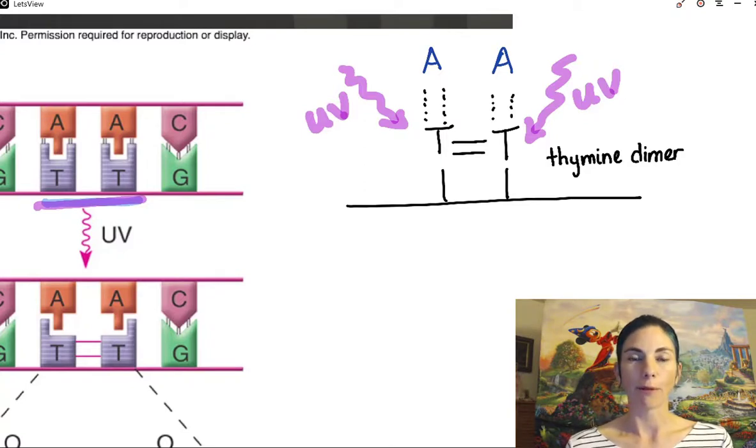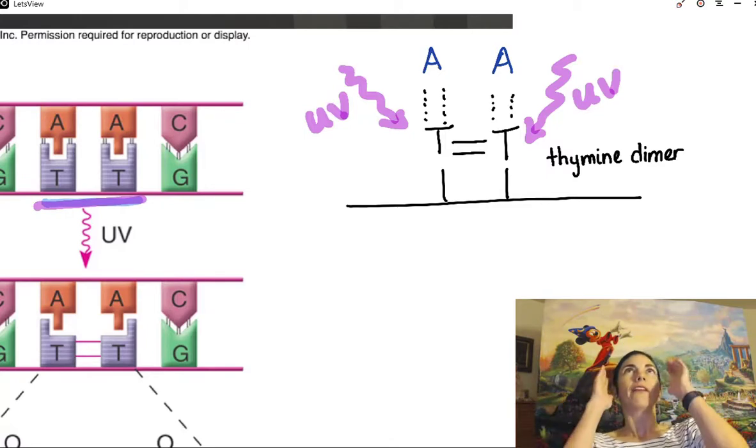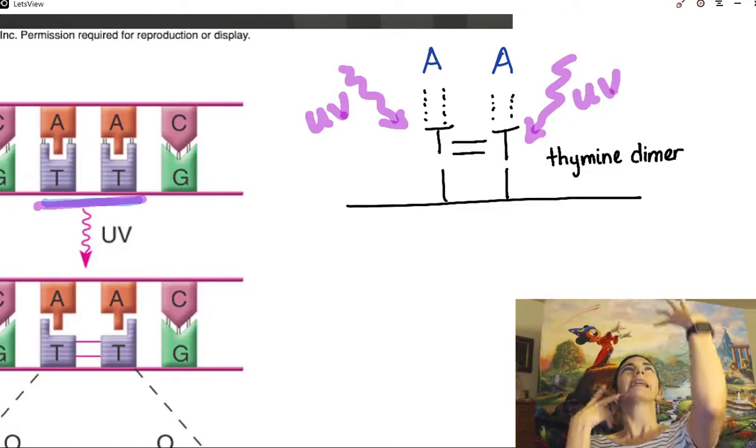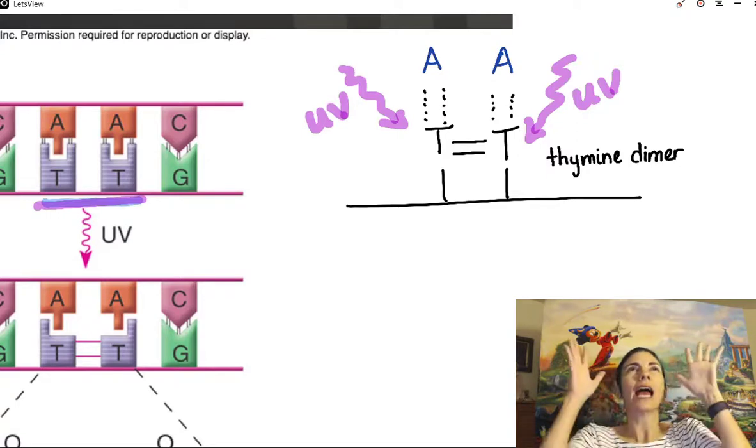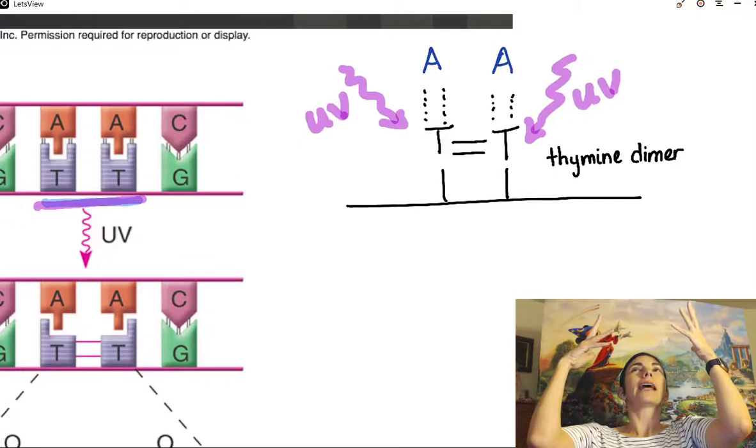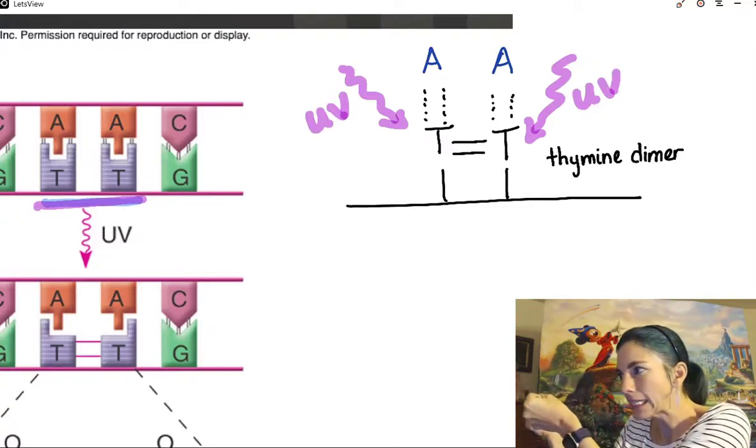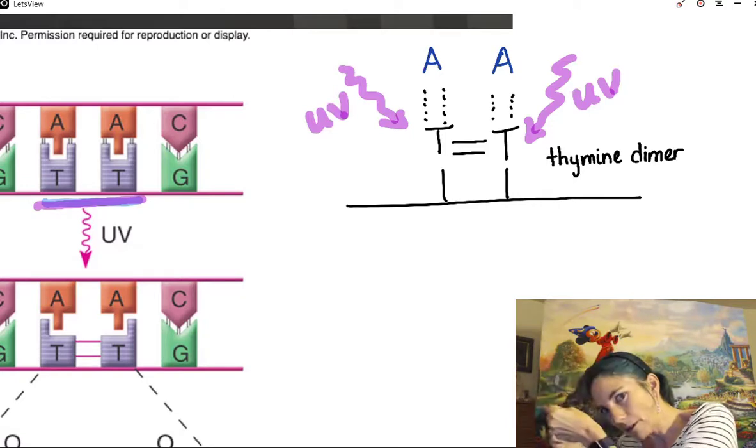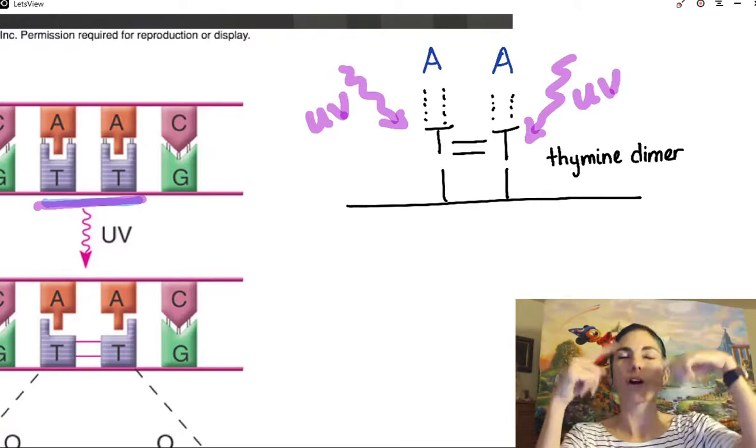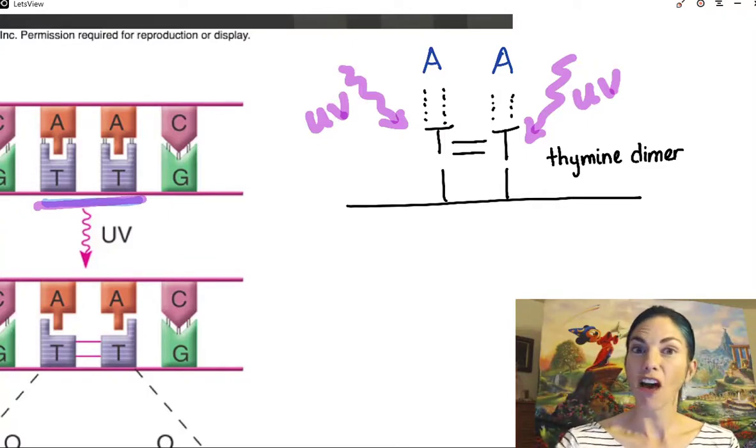Now, why is that a problem? If you imagine for a moment that I am a thymine and I'm sitting here by myself and there's my adenine up there and I'm looking at my adenine and forming two hydrogen bonds with my adenine and totally happy with my adenine. And then my electrons get excited and when they fall back down, I somehow now get compelled to be linked to the thymine next to me. What happens is my base ends up getting pulled down a little bit like this and therefore is no longer available to be hydrogen bonding with the adenines.